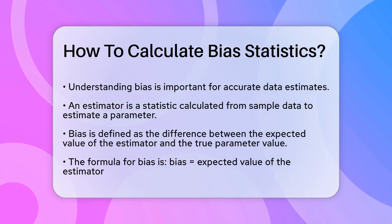When you're estimating a parameter, like the mean or proportion of a population, you use an estimator. This estimator is a statistic that you calculate from your sample data. The bias of this estimator is the difference between its expected value and the true value of the parameter you're trying to estimate.